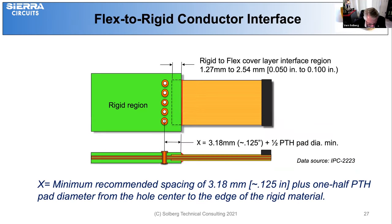To avoid compromising the integrity of the plated through hole on the rigid flex circuit, the hole locations must be set back from the edge of the rigid section. The setback of 3.18 mm plus one half the hole diameter will avoid interference from the cover layer protrusion where the flex material enters the rigid flex material.